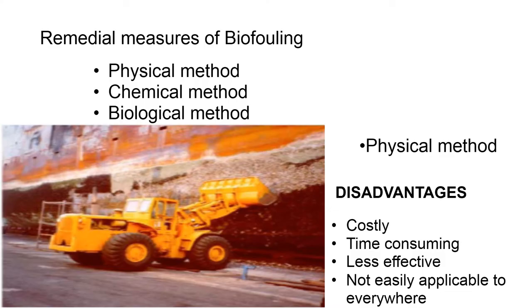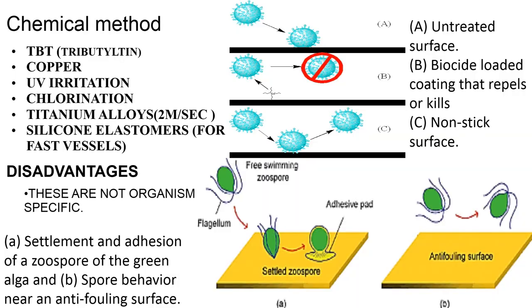Remedial measures of biofouling — there are three types: physical method, chemical method, and biological method. The physical method involves manually scraping off all the biofouling material. Disadvantages of this method are that it is costly, time-consuming, less effective, and not easily applicable everywhere. The chemical method uses chemicals like TBT (tributyltin), copper, UV radiation, chlorination, and spraying of titanium alloys at two moles per second, and even silicon elastomers for fast vessels.